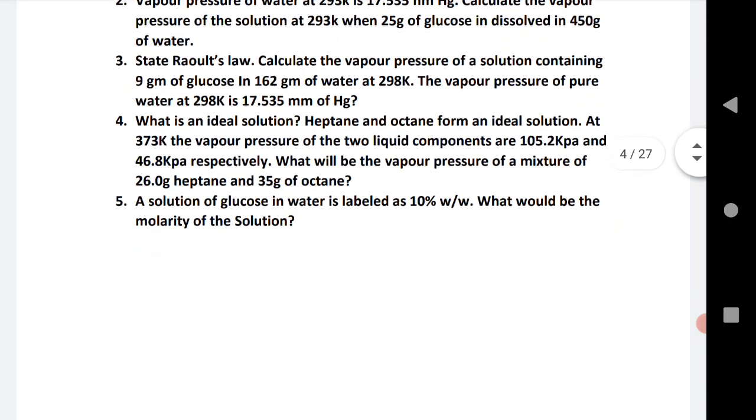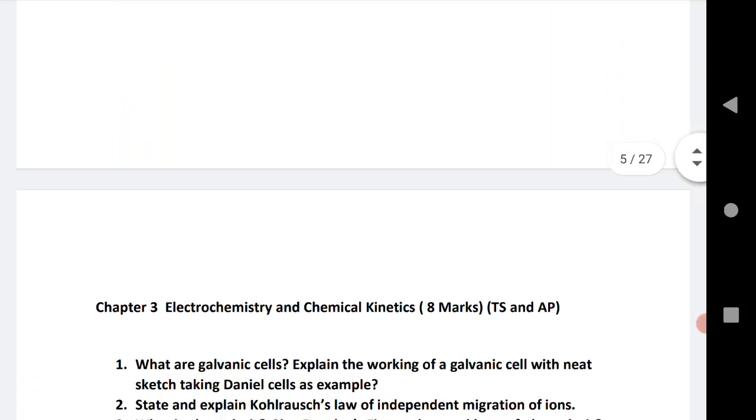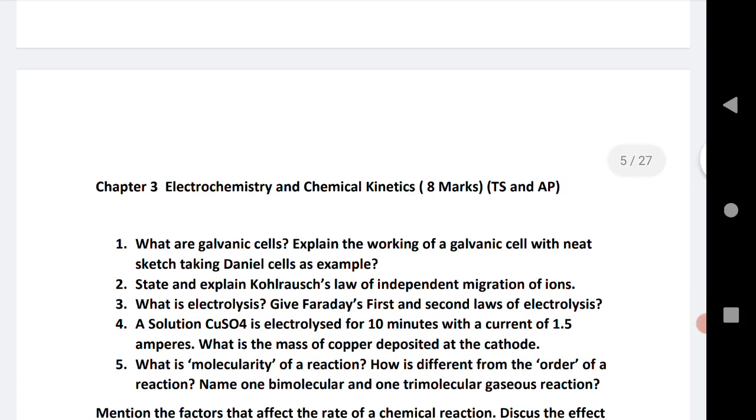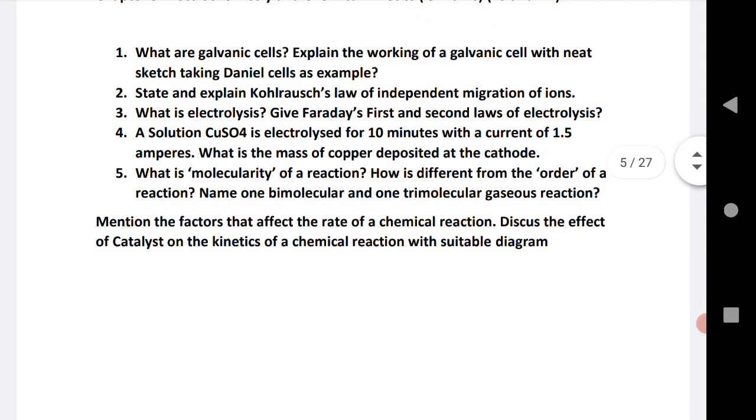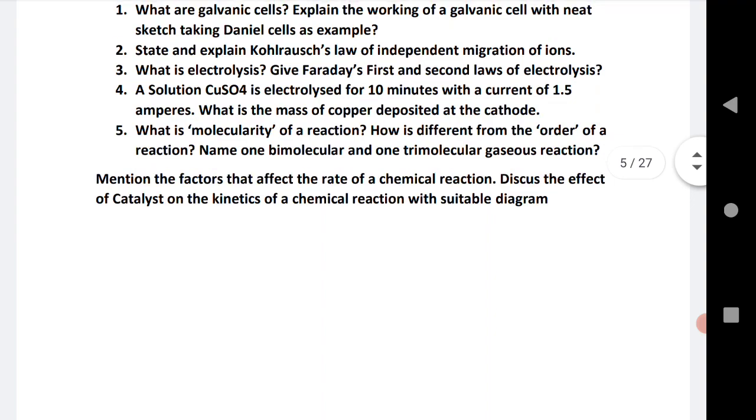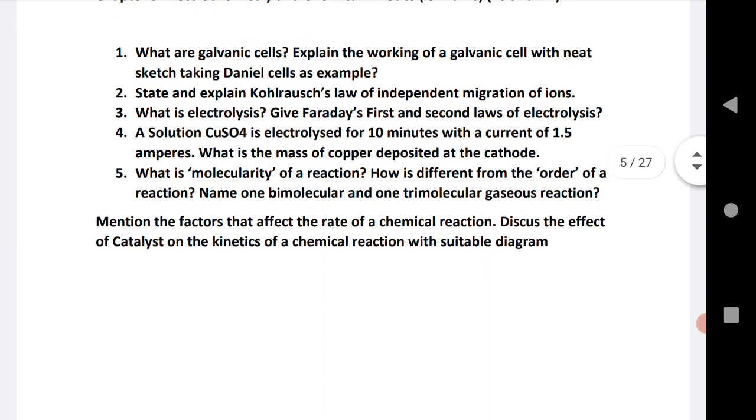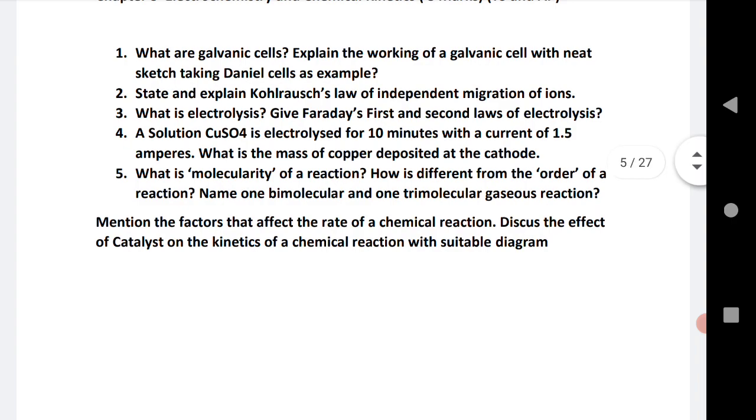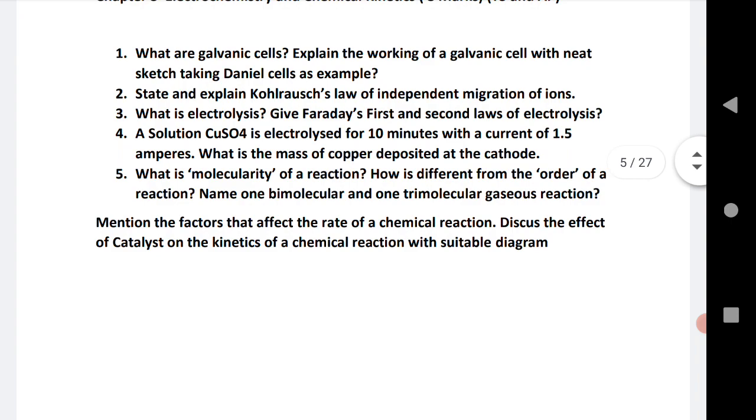Let us see the next one: electrochemistry and chemical kinetics. This is for 8 marks for both the states, Telangana and AP. I have given here all the important questions. Galvanic cells - most of the students are asking me galvanic cell is deleted, but galvanic cell is deleted, it is showing in the portion, but galvanic cell you have to compare it with the Daniel cell. This is not deleted. I request you to read this question.